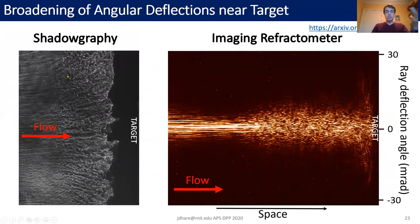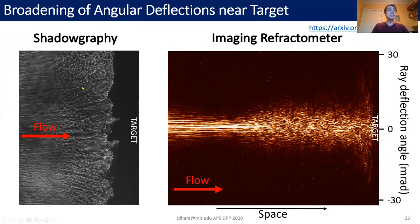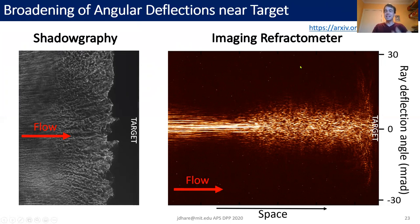Looking at some example data: we actually take a beam splitter so we simultaneously do shadowgraphy and imaging refractometry on the same laser beam — from exactly the same time and same plasma. In the shadowgraphy you can see the flow coming in from the left is very laminar and collides with the target making a very turbulent region. In the imaging refractometer you can see a very similar story: the flow comes in from the left and the rays are mostly landing near zero deflection angle because they're mostly undisturbed. However once we get into the turbulent region the broadening is significant, with rays deflected more and more by the cumulative effect of all the density fluctuations in the plasma.